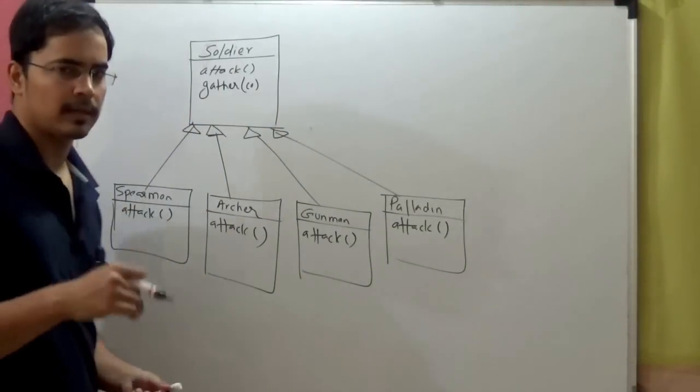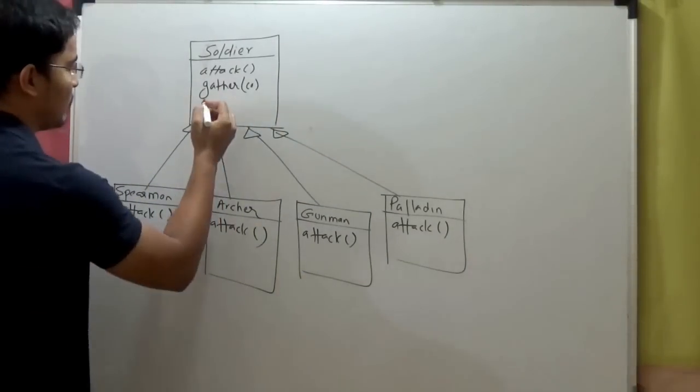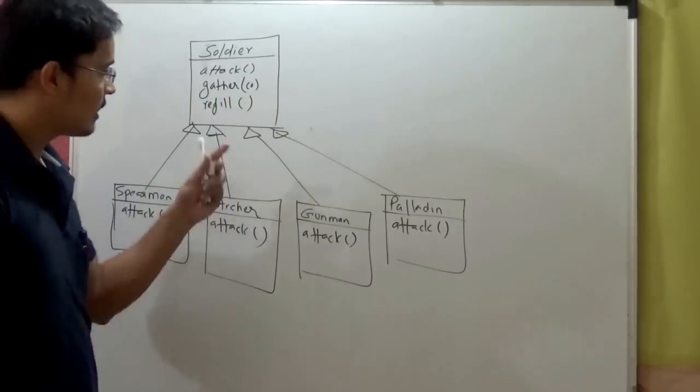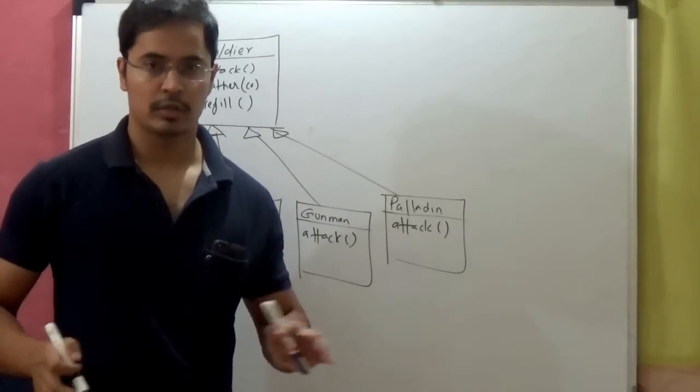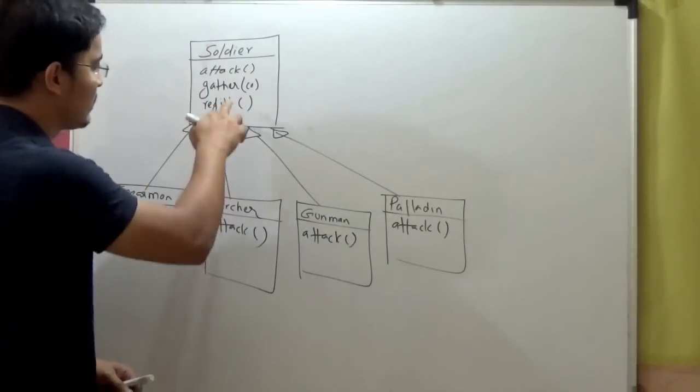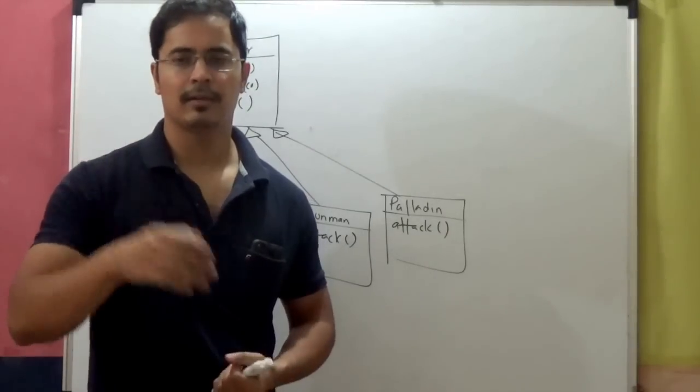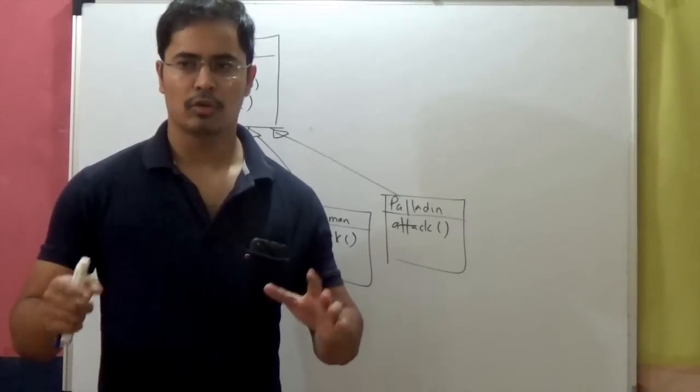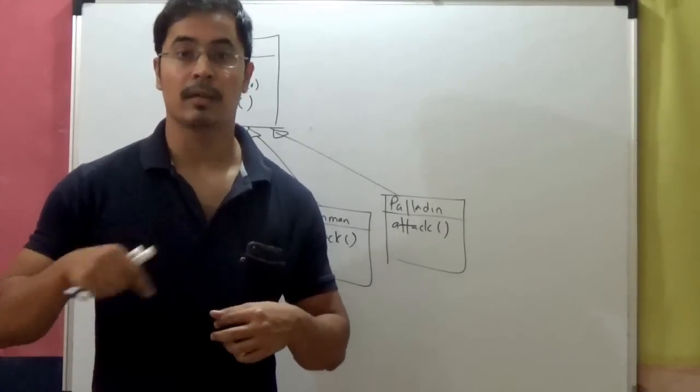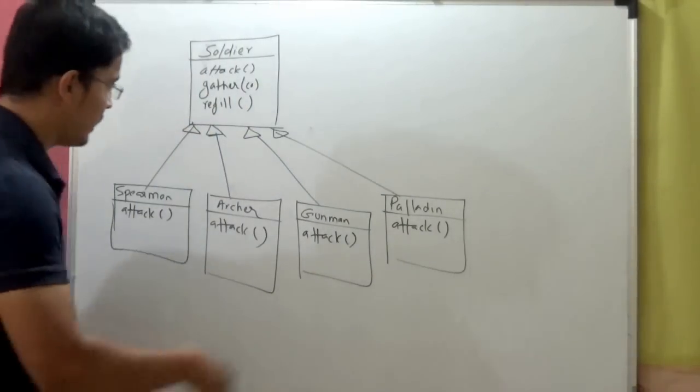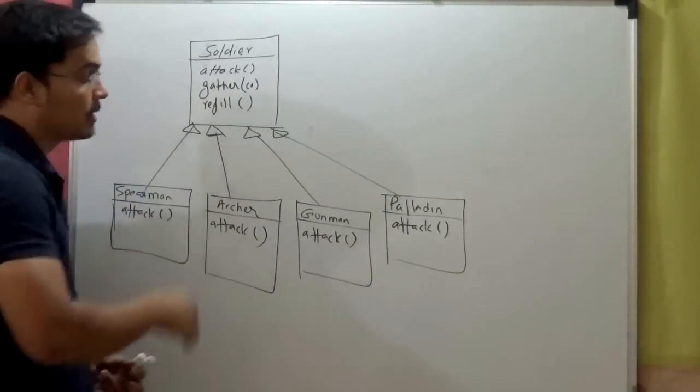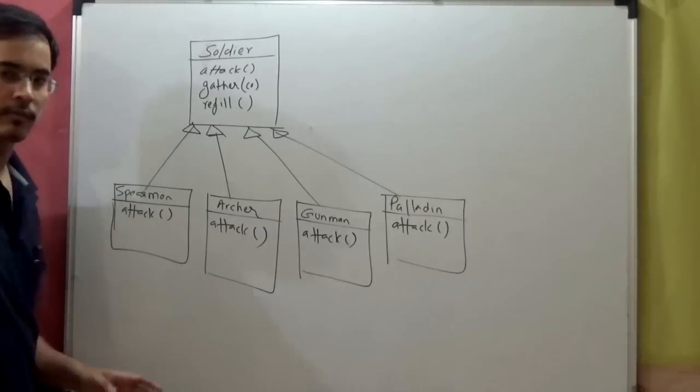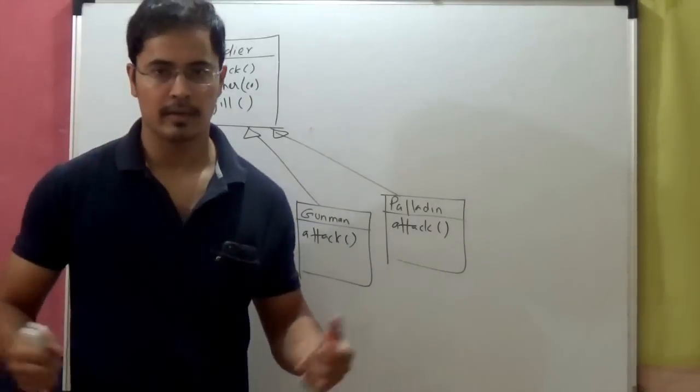As a developer, my first instinct will be to put a refill method here in the base abstract class of soldier. This refill method will be something like after a specific interval of time, let's say 10 seconds or something, the soldier will stop fighting and will spend some time in refilling the weapon and then continue fighting. Because you kept this concrete method in your soldier abstract class, all these specific types of soldiers will automatically get that refill behavior.